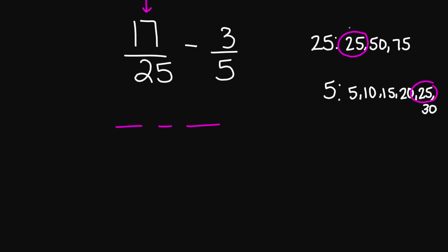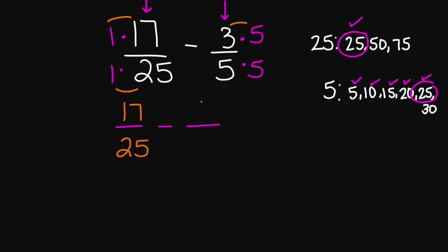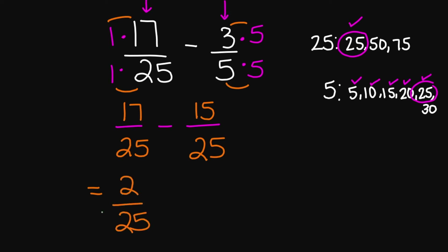I'm going to multiply top and bottom by 1 because 25 times 1 gives me 25. For 3 over 5, I need to multiply my 5 by 5 to get 25, so I'll multiply top and bottom by 5. Now multiplying: 1 times 17 is 17, over 1 times 25 is 25. Minus 3 times 5 is 15, over 5 times 5 is 25. So 17 minus 15 is 2, over 25. This is your final answer.